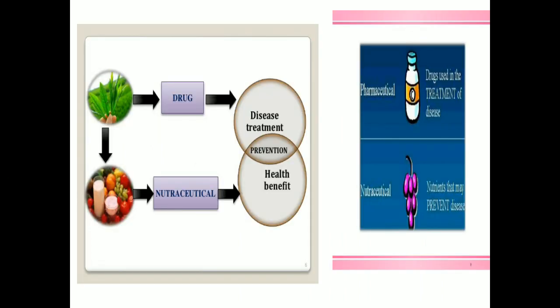This diagram shows the difference between drug and Nutraceuticals. A drug is a substance used for disease treatment, while Nutraceuticals are mainly used for health benefits. When you combine a drug and Nutraceuticals, they are mainly useful for the prevention of disease. Both are necessary — drugs for treatment and Nutraceuticals for preventing disease by providing nutrients.